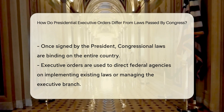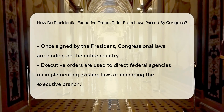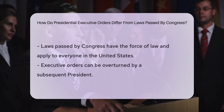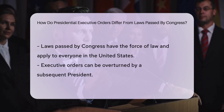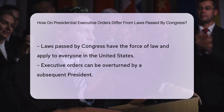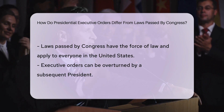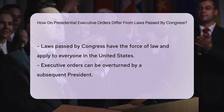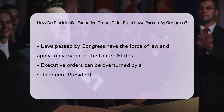Once signed by the president, these laws are binding on the entire country. Executive orders are typically used to direct federal agencies on how to implement existing laws or to manage the executive branch's operations. Laws passed by Congress, on the other hand, have the force of law and apply to everyone in the United States.